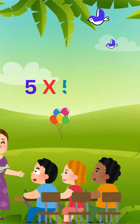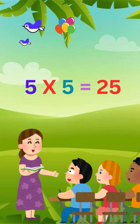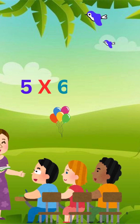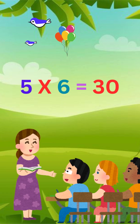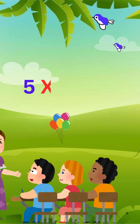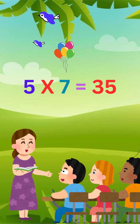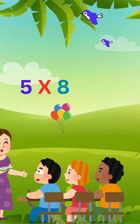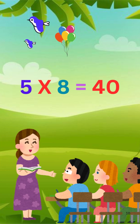5 x 5 is 25. 5 x 6 is 30. 5 x 7 is 35. 5 x 8 is 40.